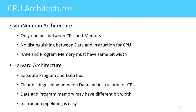In case of Von Neumann architecture, there is only one bus between CPU and memory, so there is no distinction between data and instructions for the CPU. The same bus is used to transfer instructions to the CPU from memory, as well as to transfer data from memory to CPU and from CPU to memory. Because the same bus is used for connecting program memory and data memory to the CPU, the RAM and program memory must have the same bit width.